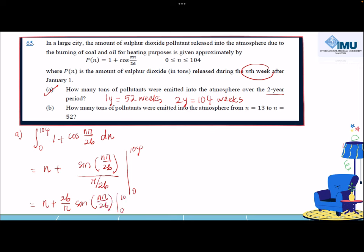Now it looks more simple. You just simply need to evaluate by substituting the upper limit into n minus the lower limit into n. Approximately, you will have the answer of 104. That is for part A.